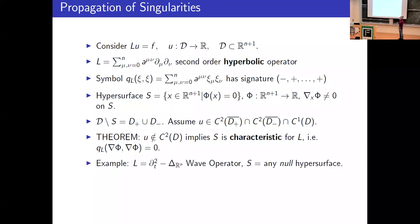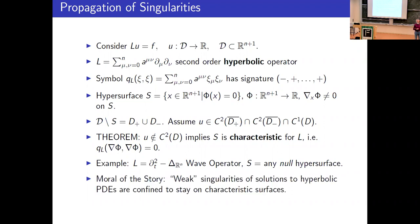For example, if you take the operator to be the wave operator, then any null hypersurface will have that property. The way I would like you to think about this is: if one has a singularity of a certain weak class — meaning the function is C2 across a hypersurface and C1 overall — then this singularity is doomed to stay on the characteristic surface. Its motion is confined to that particular surface.